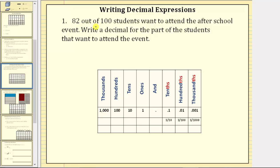For number one, 82 out of 100 students want to attend the after school event. Write a decimal for the part of the students that want to attend.